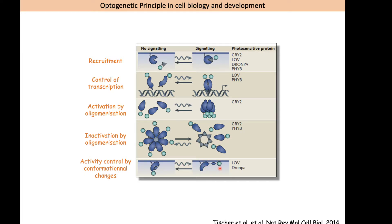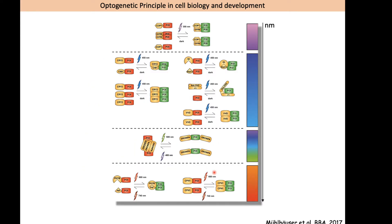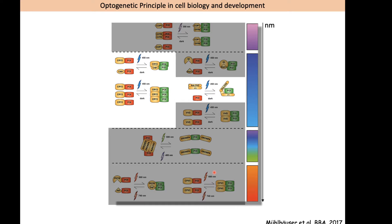Here I present all these optogenetic tools, and you can see they are distributed all along the light spectrum. I will focus on the main ones used in cell biology and cell development experiments, which are the CRY2 module with CIB1 and the LOV domains. These two proteins are stimulated by UV-blue light, around 458 or 488 nanometers wavelength.